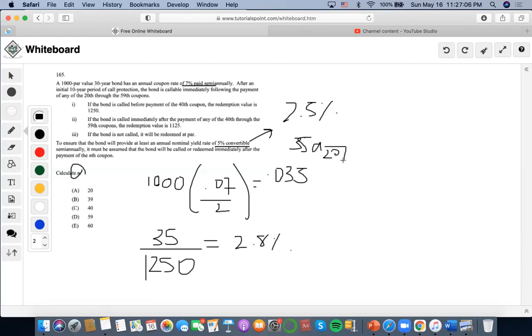We're going to set up an equation and do 35A angle 20 at 2.5% yield rate, plus the redemption of 1250 to the V20. Let's solve this. I'm going to do 35 as the payment, 20 as the number of years, 2.5 as the interest rate, 1250 as the future value, and I'm getting 1308.46 as the price of this premium bond.